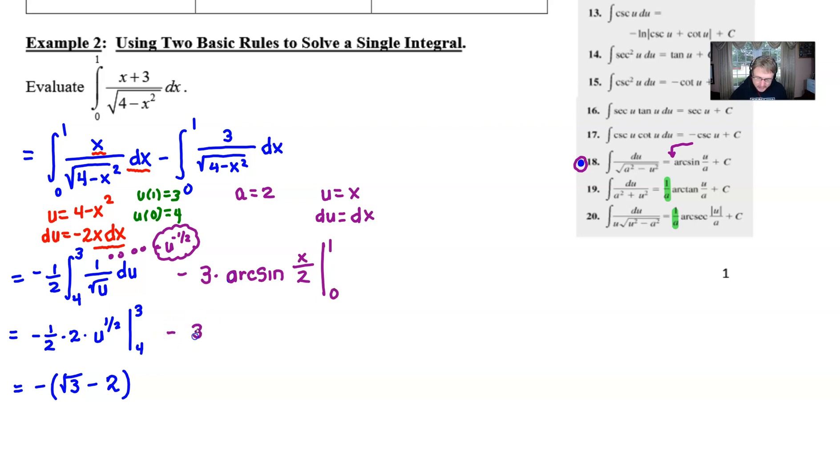Last but not least we are going to go ahead and plug in our 1 and our 0. So we'd have minus 3 out in front, arc sine of 1 half minus arc sine of 0. Pretty much the only thing left to do is evaluate this arc sine of a half. The arc sine of 0 is pretty easy. I think you all know that that's 0.